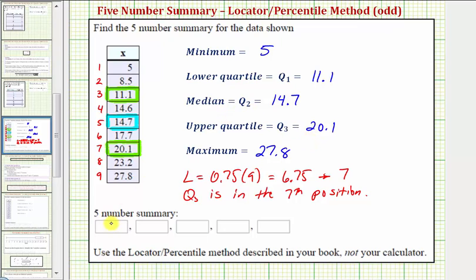So our five-number summary is 5, 11.1, 14.7, 20.1, 27.8. I hope you found this helpful.